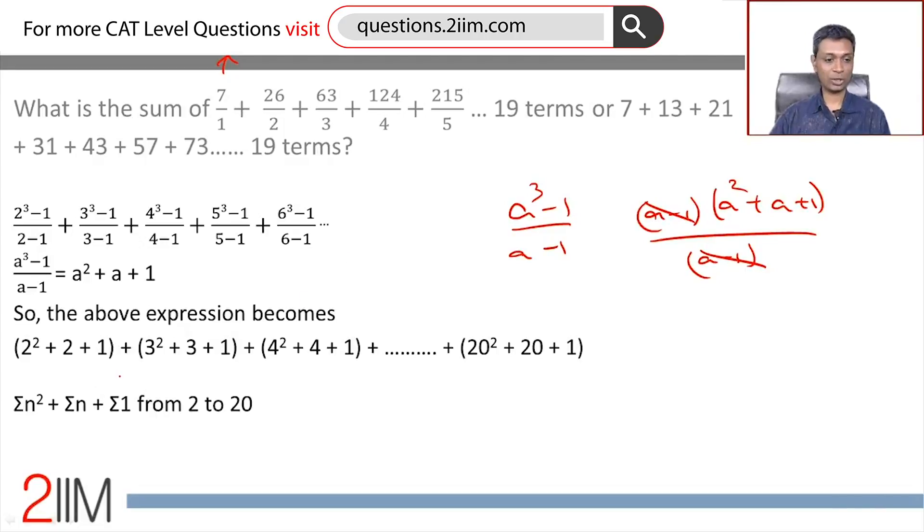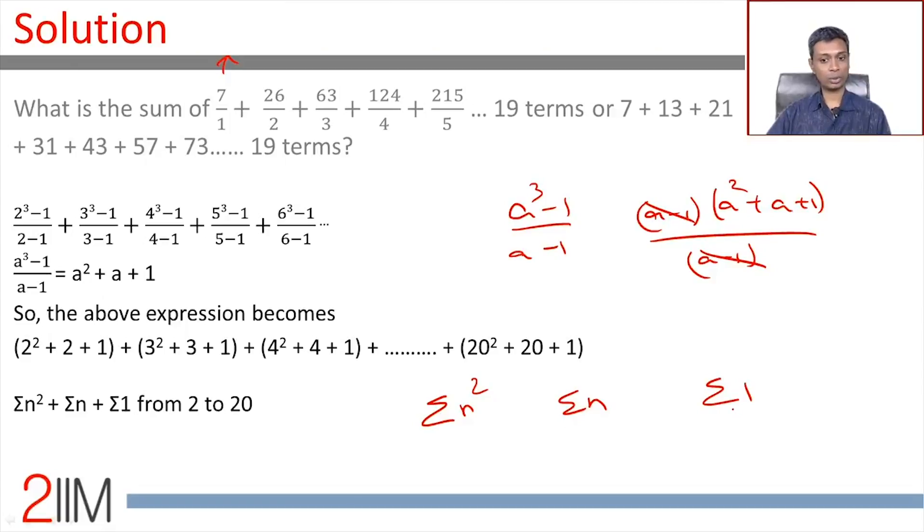So we are actually going to do, finally this is going to become sigma n², sigma n, sigma 1. When we do this, we add all squares from 1² to 20². We do this all from 1 to 20, which we have to do from 2 to 20. So substitute the formula from 1 to 20 and then eliminate that first term. It is a critical point.